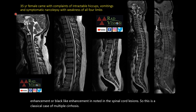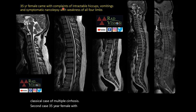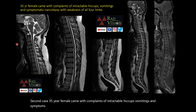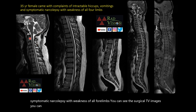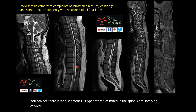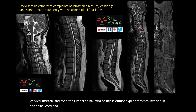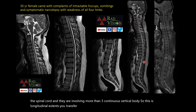Second case: a 35-year-old female came with complaints of intractable hiccups, vomiting, symptomatic narcolepsy, and weakness of all four limbs. You can see the sagittal T2-weighted images showing long-segment T2 hyperintensities in the spinal cord involving the cervical, thoracic, and lumbar cord — diffuse hyperintensities involving more than three contiguous vertebral bodies. This is a longitudinally extensive transverse myelitis (LETM) picture.